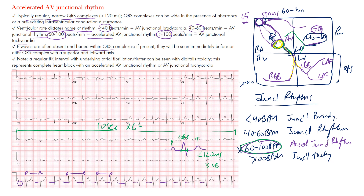To calculate the rate: the standard 12-lead EKG is 10 seconds, and 10 seconds times 6 equals 60 seconds — one minute. Count the number of ventricular complexes and multiply by 6. Counting here: 1, 2, 3, 4, 5, 6, 7, 8, 9, 10, 11, 12, 13, 14, 15, 16 — so 16 times 6 is about 96 beats per minute, which is between 60 and 100, though close to junctional tachycardia.